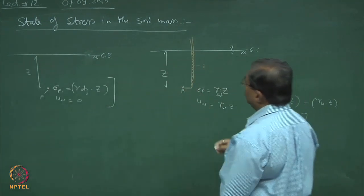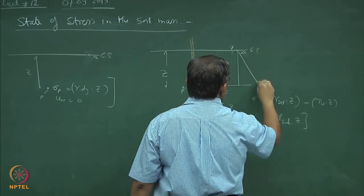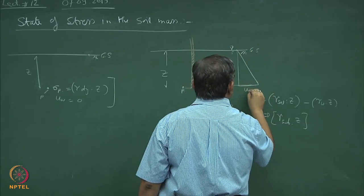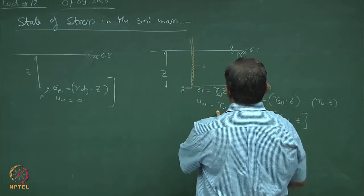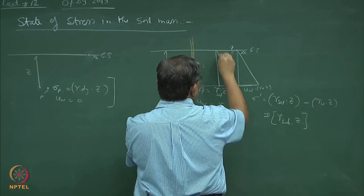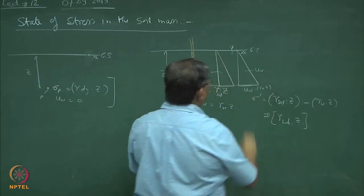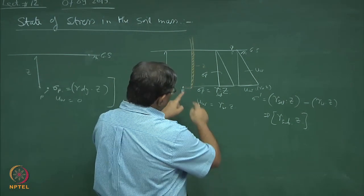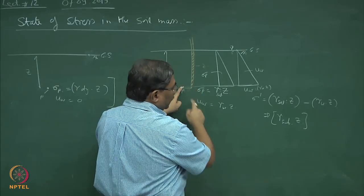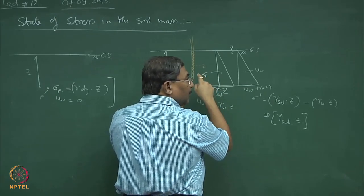I can draw the pressure diagrams also. This is for u_w which equals γ_w times z, and for σ_p I can also plot the pressure distribution. So this is for σ_p and this is for u_w. I hope you have understood how to compute the state of stress at point P and the pore pressure. I can plot the variation of pore pressure by substituting z, and if I know z I can compute the normal stresses also.